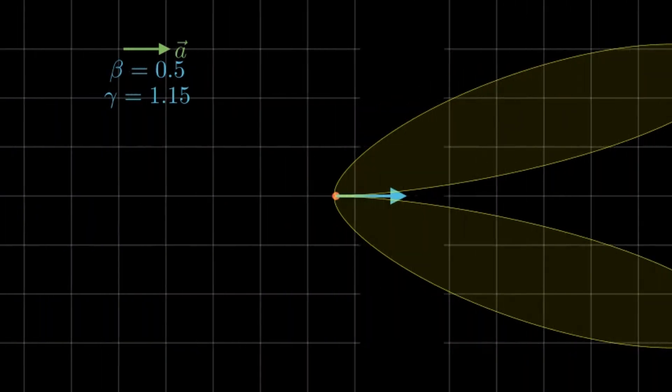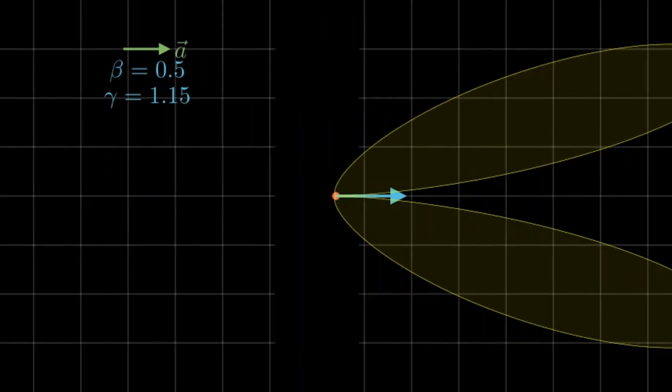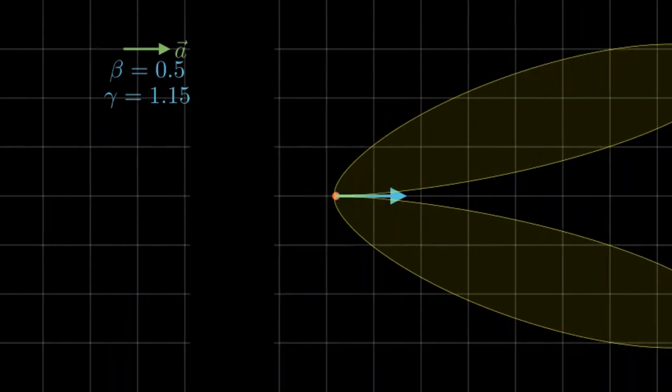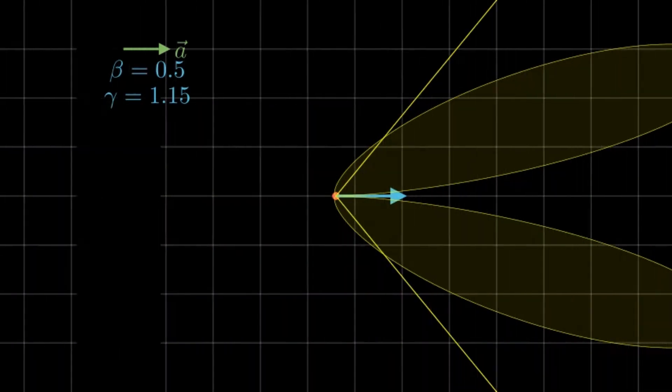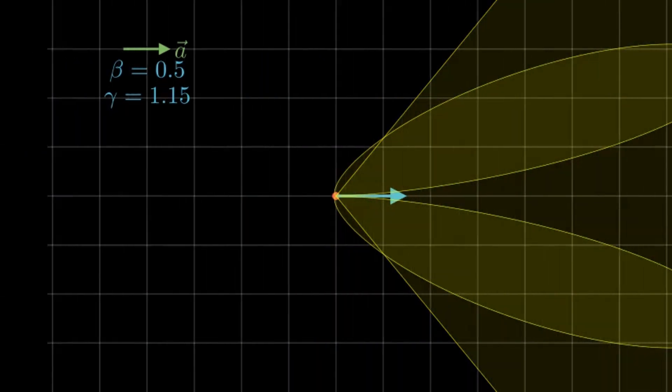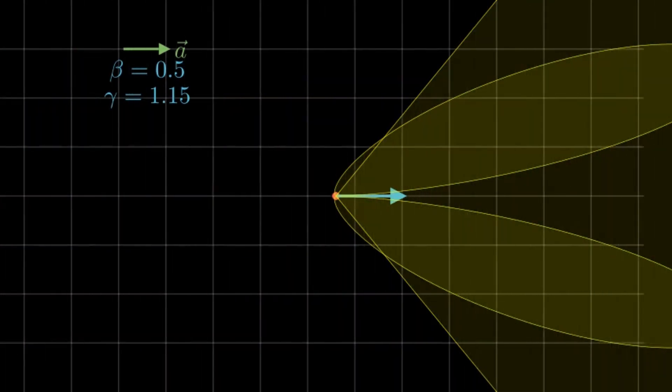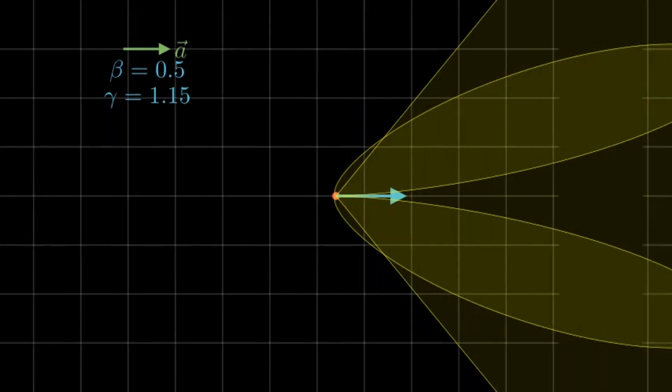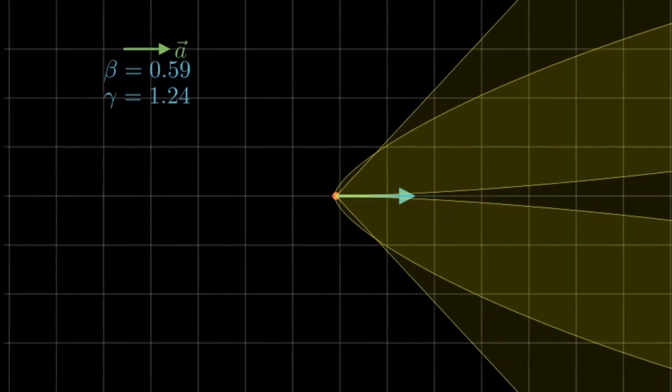Now there is a common approximation to this beaming effect, and that is a cone of angular width one over gamma. Therefore, the larger beta is, the more sharp this cone is. When we hit highly relativistic speeds, this one over gamma cone is a great approximation.